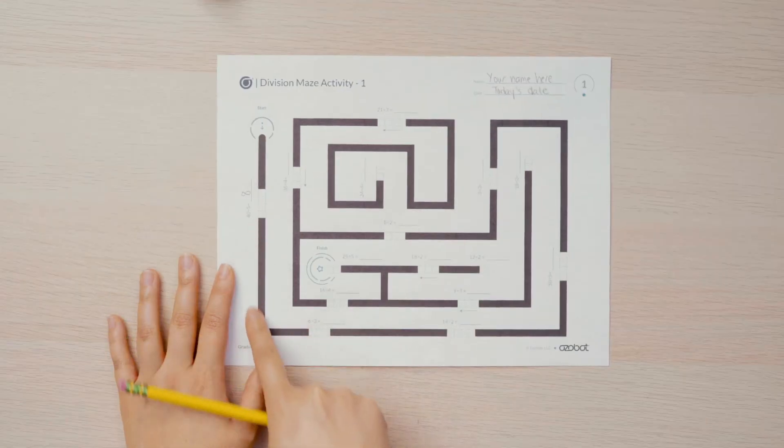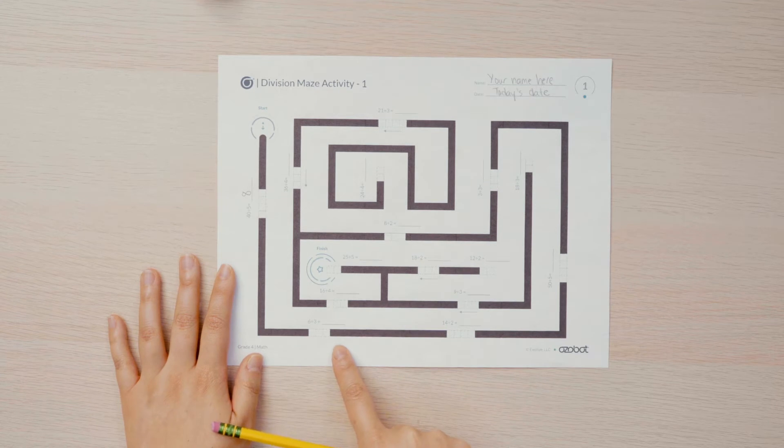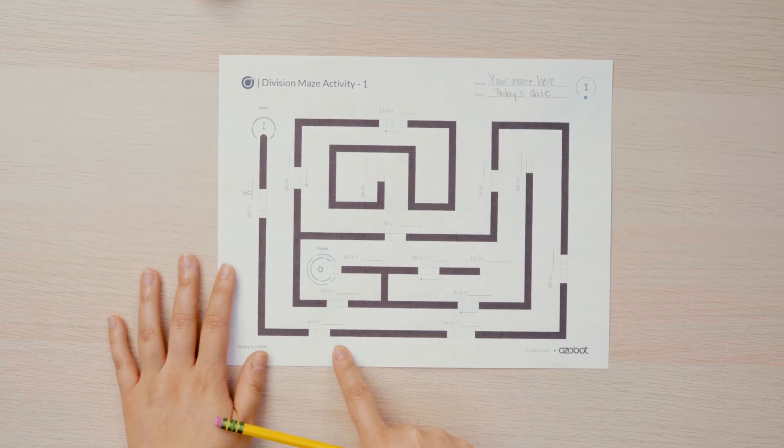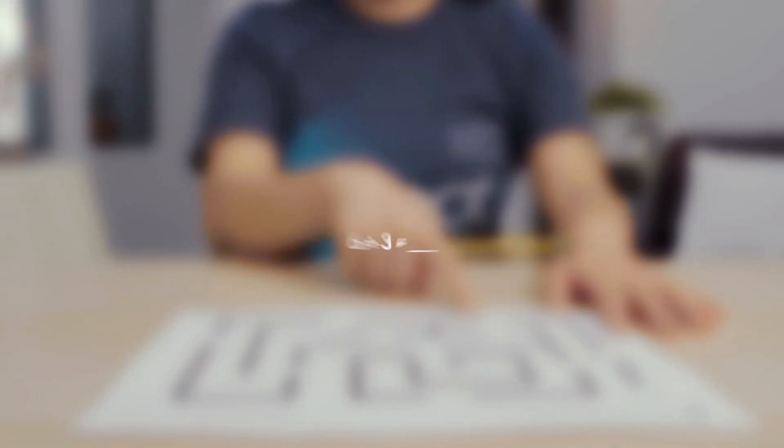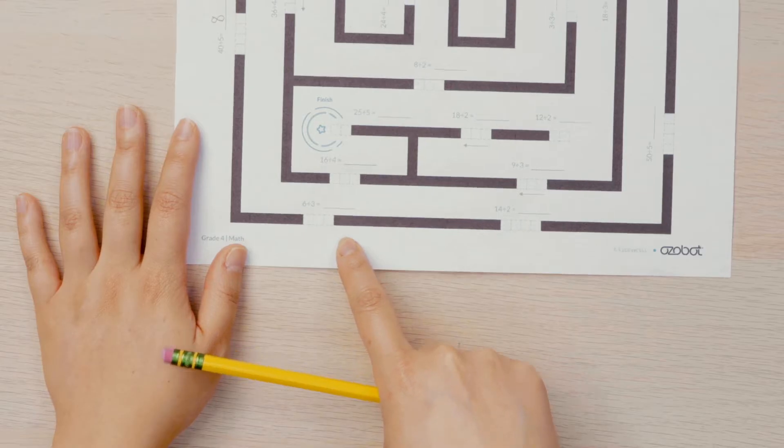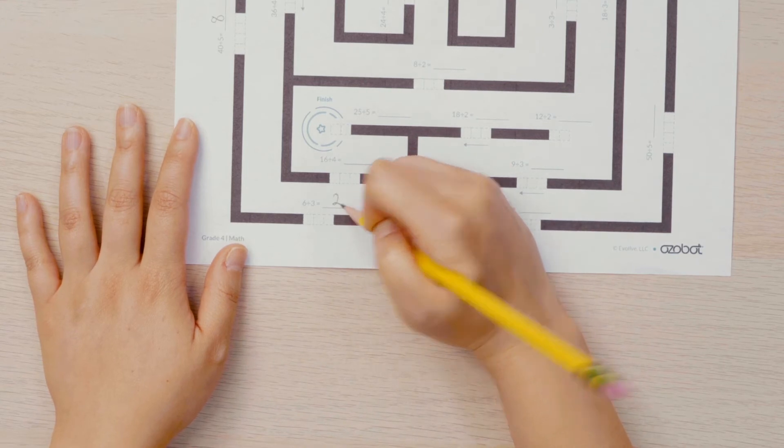If you continue along the maze, the second division factor you come to is 6 divided by 3. What is 6 divided by 3? Right again. It's 2. Write 2 on the line.